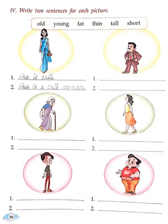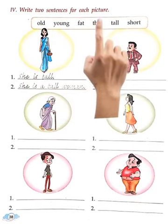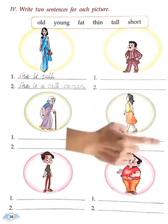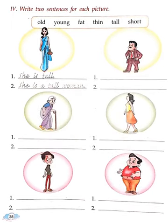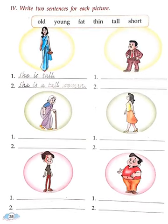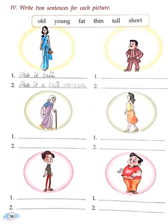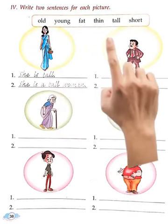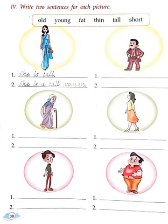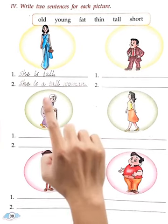Page number 38 mein kya karna hai — Question number 4: 'Write two sentences for each picture.' Yaani ki is page mein jitne pictures diye gaye hain, har ek photo ke liye aapko do sentences banane hain. Jo word box mein diya gaya hai, us se sentence banao. For example: 'This is a woman.'